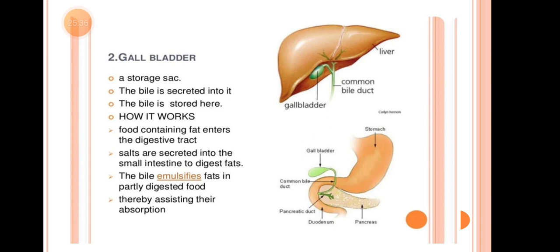Next is the Gallbladder — a storage sac where bile is secreted and stored. When food containing fat enters the digestive tract, bile salts are secreted into the small intestine to digest fat. Bile emulsifies fats in partly digested food, thereby assisting their absorption.